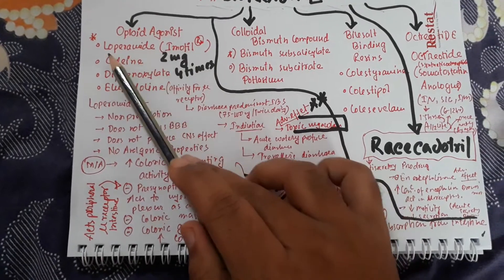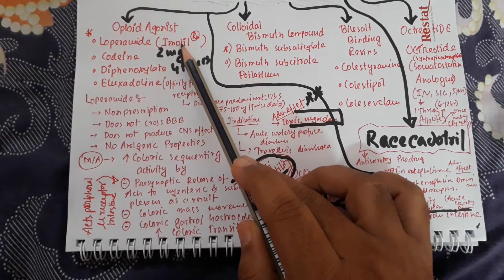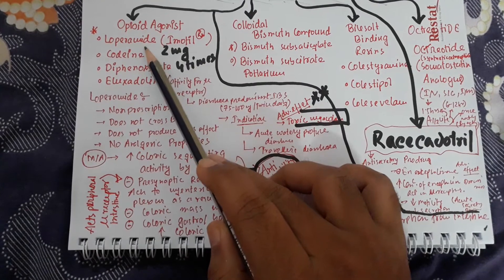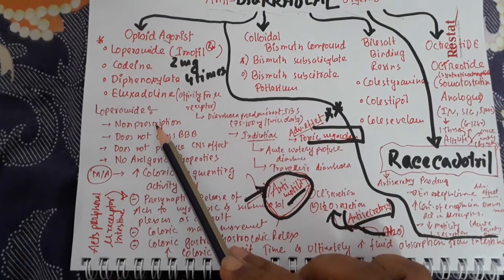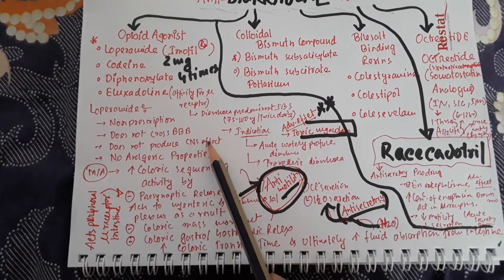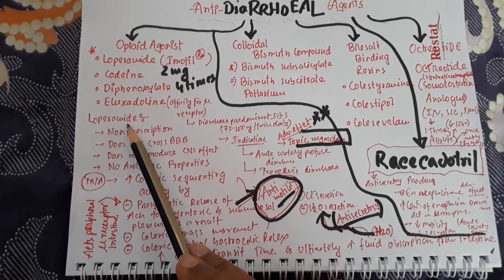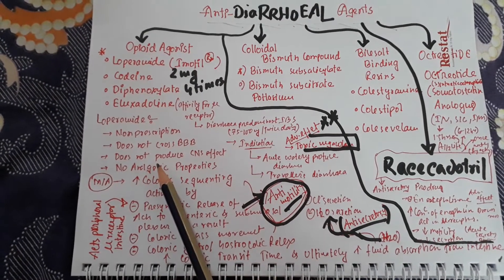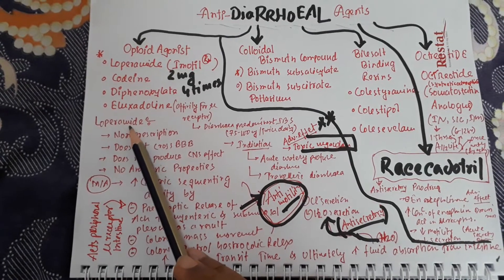In this video we will discuss only loperamide. In Bangladesh, the trade name of loperamide is Imodium. Loperamide is given 2 mg four times daily to control diarrhea. Loperamide is a non-prescription medicine, or sometimes it is an OCD drug. It does not cross the blood-brain barrier and does not produce central nervous system effects. Loperamide is an opioid agonist that acts on mu receptors both centrally and peripherally, but because it does not cross the blood-brain barrier, it does not produce CNS effects and does not cause analgesic properties, so there is no chance of addiction.